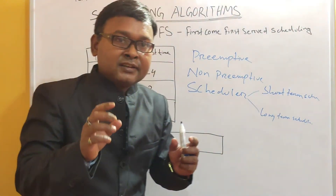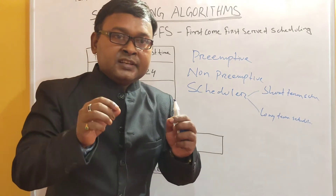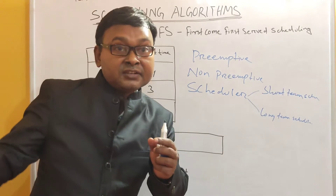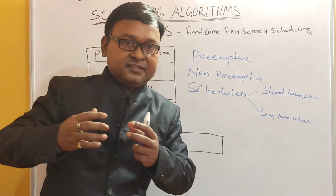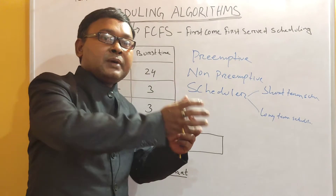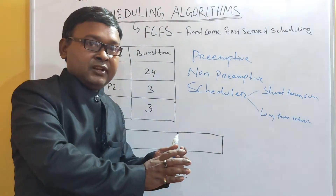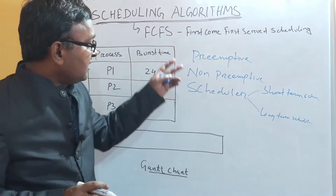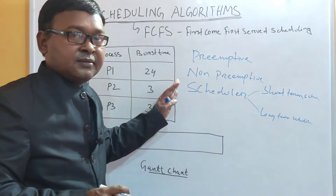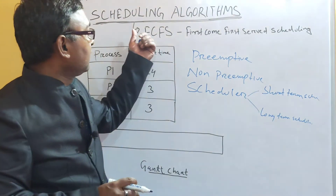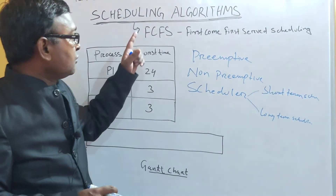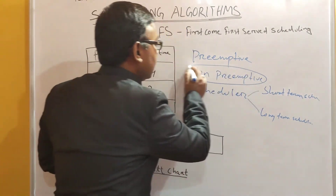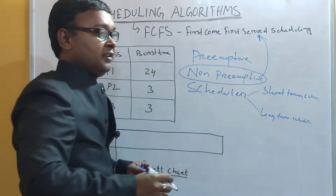The long term scheduler is responsible for scheduling your jobs and processes from your secondary storage device — that is a very long distance — and bringing it into the primary memory. These are the three terms you need to understand before moving to learn about the FCFS scheduling algorithm. FCFS scheduling algorithm is a non-preemptive scheduling algorithm.